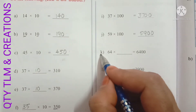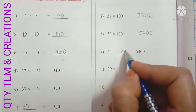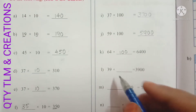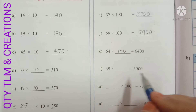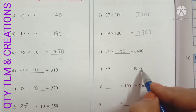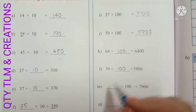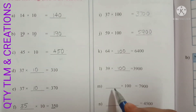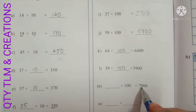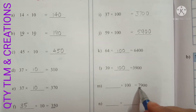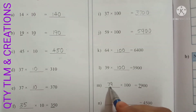Next K: 64 into 100 equals 6400. Next L: 99 into 100 equals 9900. Next M: dash into 100, the product is 7900, so the multiplicand is 79. We write 79 here, so 79 into 100 equals 7900.